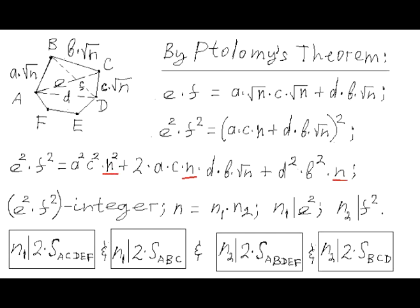And by induction assumption, in each partitioning, each partition has doubled area divisible by, in one case n1, and in the other case n2, which proves that our polygon with a given number of sides has doubled area divisible by both n1 and n2, which means that it's divisible by n.